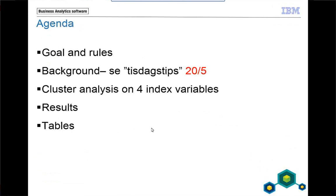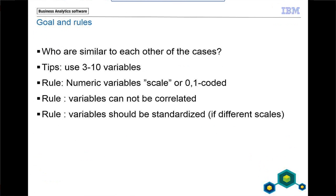The goal is to get to know which cases are similar to each other, so to see groups among the people. How many variables you should use is about three to ten, and the variables should be numeric or dummy coded. They cannot be correlated, so factor analysis is good to do before a cluster analysis. The variables should also be standardized, especially if they have different scales.